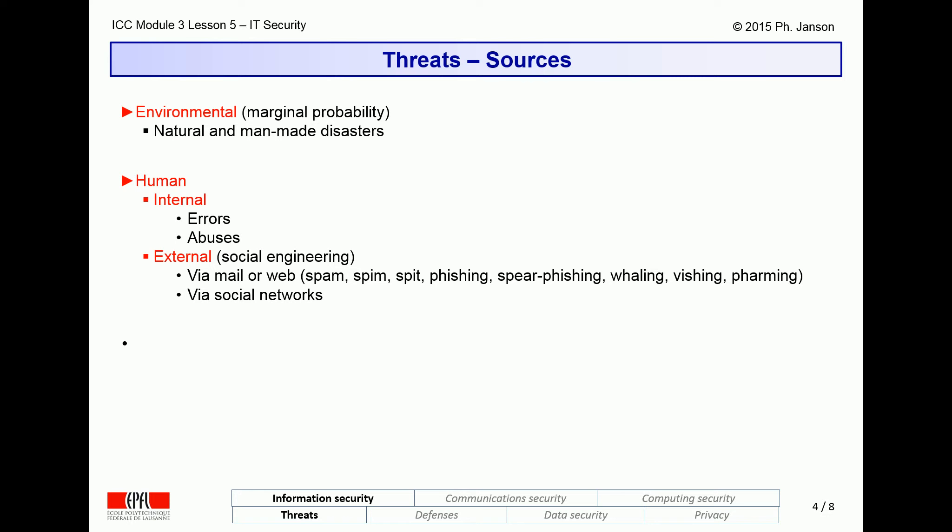These threats include attempts to infect our systems with spam, SPIM (which is spam via instant messaging), or SPIT (spam via telephone), as well as attempts to steal our identity via all forms of phishing and pharming, including spear phishing, whaling, vishing, etc.